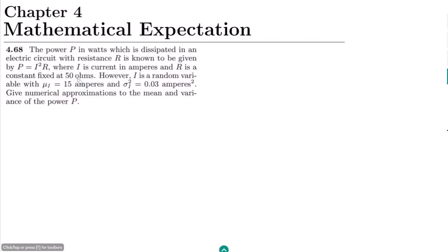Welcome back. This is question 4.68. The statement of this question is: the power P in watts dissipated in an electric circuit with resistance R is given by P = I²R. This is the well-known formula for calculating power dissipated across a resistor, where I is the current in amperes and R is a constant fixed at 50 ohms. However, I is a random variable with μ_I = 15 amperes and σ²_I = 0.03 amperes squared, which is the variance of the current. Give a numerical approximation to the mean and variance of the power P.